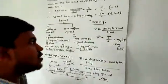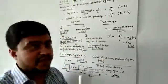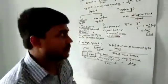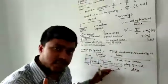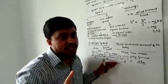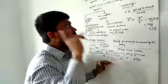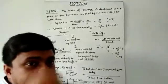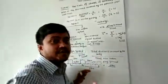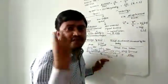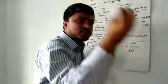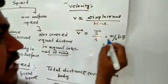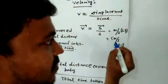Our speed part is over. The next parameter is velocity. Velocity means the rate of change of displacement. Speed means the rate of change of distance, but velocity means the rate of change of displacement. So velocity equals displacement divided by time. The SI unit is meter per second and the CGS unit is centimeter per second.